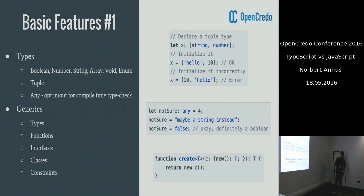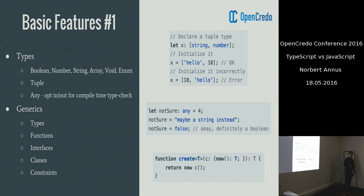Let's look at the basic feature set of the language. Among basic types, it supports tuples, which might be familiar to you from Scala. The tuple construction allows developers to work with arrays in a richer way, as shown in the top right example.